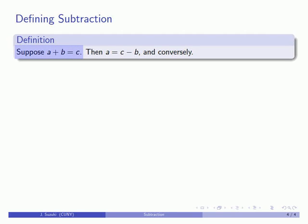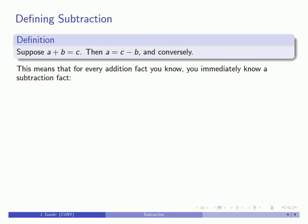If I have an addition a + b = c, then I can write a subtraction a = c - b. Conversely, if I have the subtraction a = c - b, I will also have the addition a + b = c.